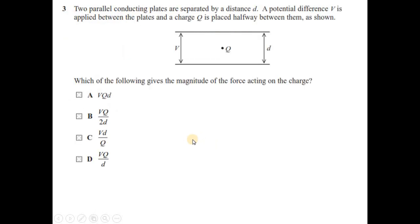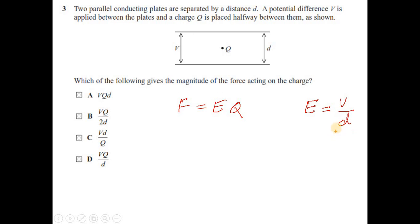Question 3: two parallel conducting plates are separated by distance D, a potential difference V is applied, and charge Q is placed halfway between them. The force on the charge is F = EQ. Between the plates, electric field intensity E = V/D. Substituting gives F = VQ/D. The answer is option D.